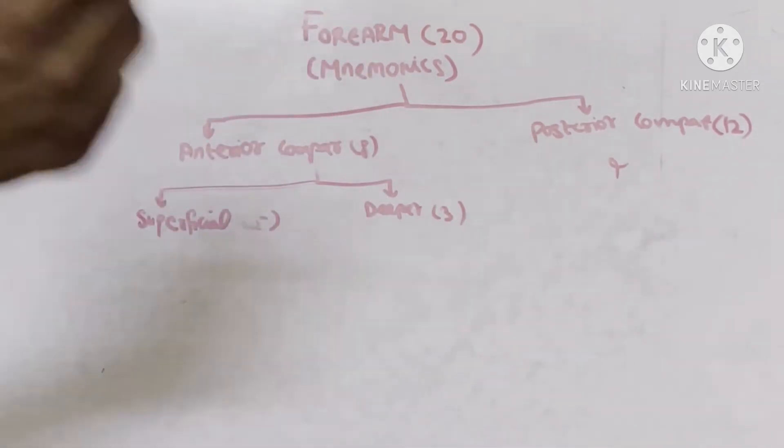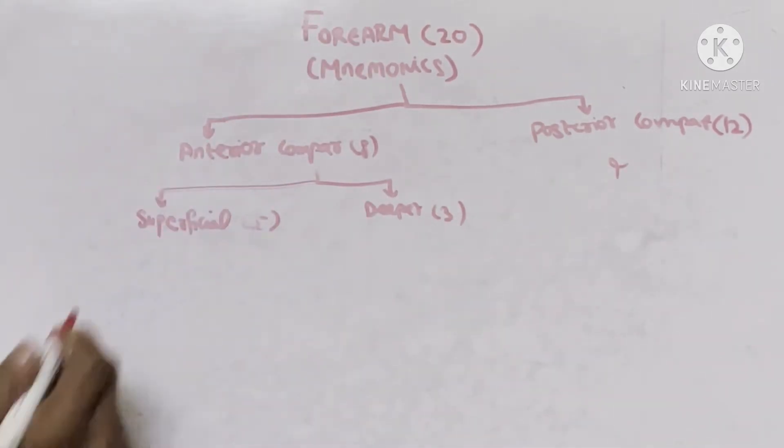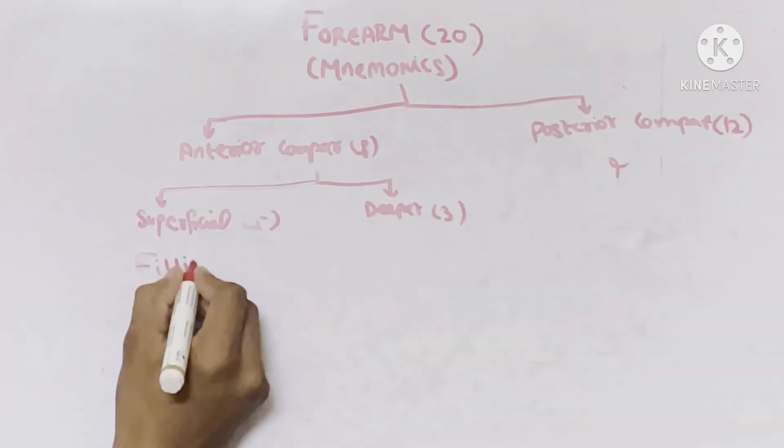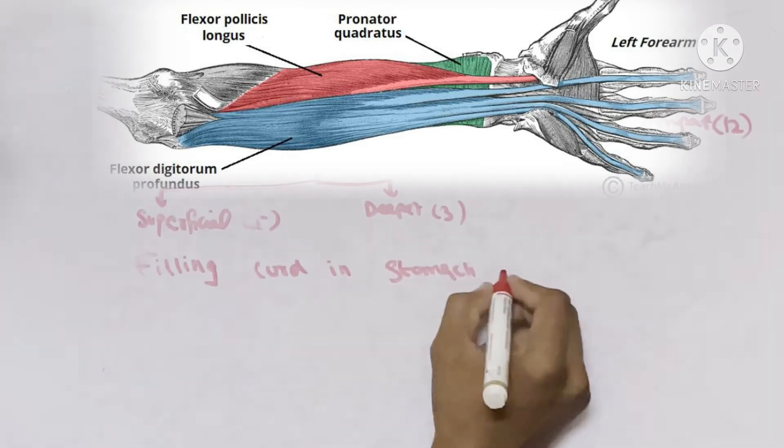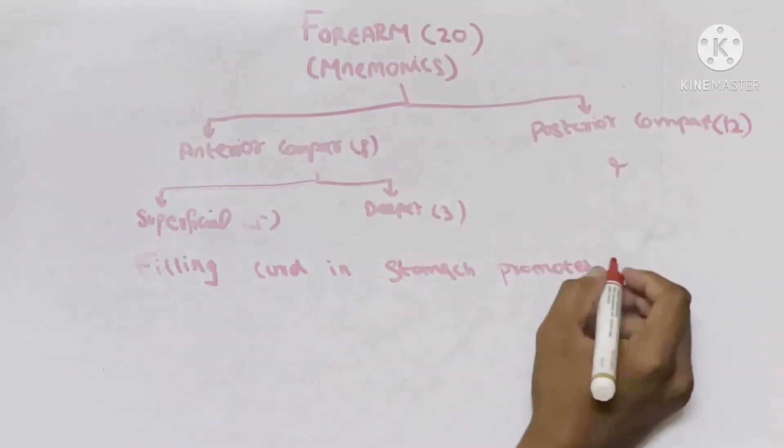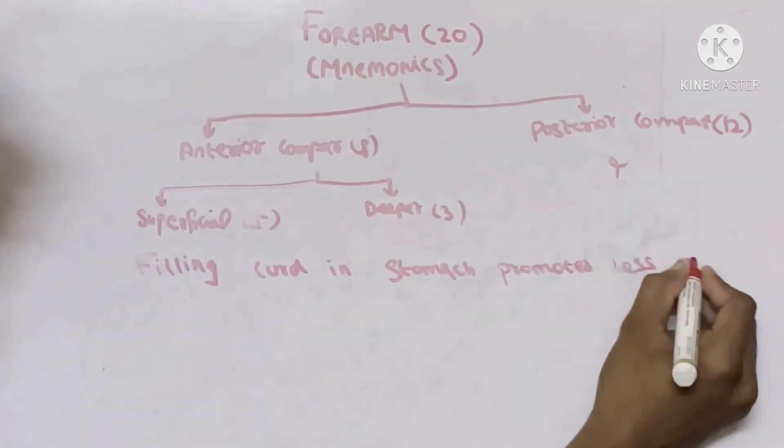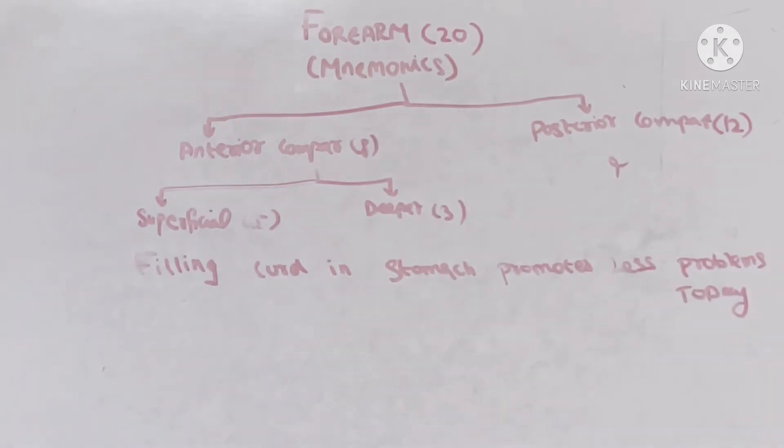What are the five muscles and three muscles? Just remember these five and three with only two simple statements. The statement for superficial muscle is: filling curd in stomach promotes less problems today. The statement is filling curd in stomach promotes less problems today and we have five muscles.